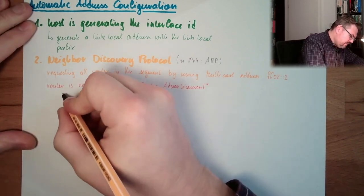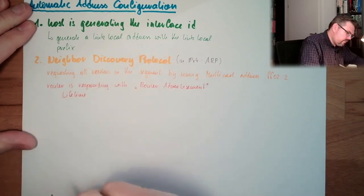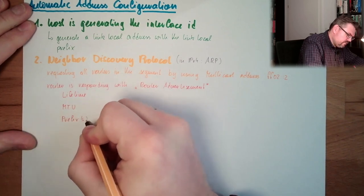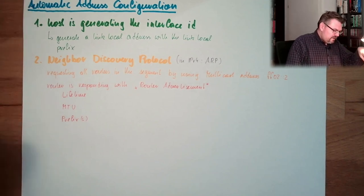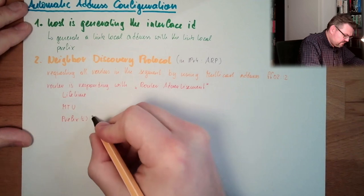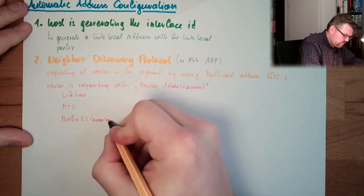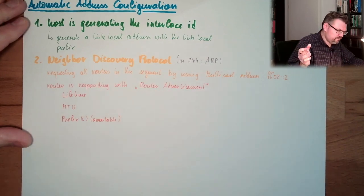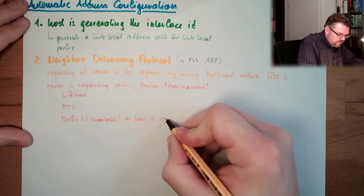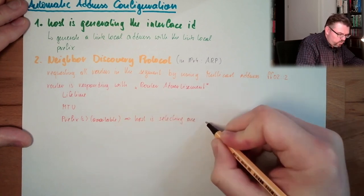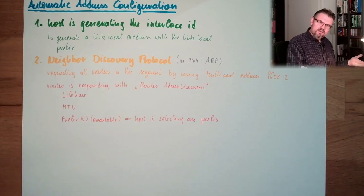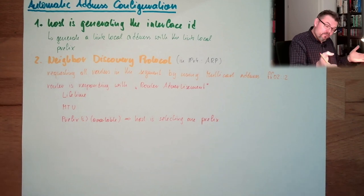Because what is inside this router advertisement? Inside there is a lifetime and maximum transfer unit and prefixes. So the router is responding with possible available prefixes. Available prefixes. Can be a list of prefixes. So we offer a choice of prefixes. Even if the choice is just one. But we could offer a choice of prefixes.